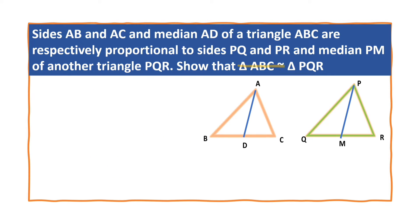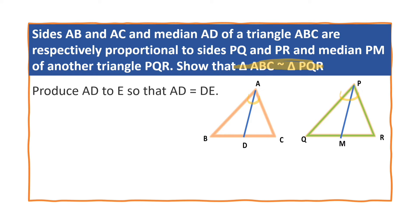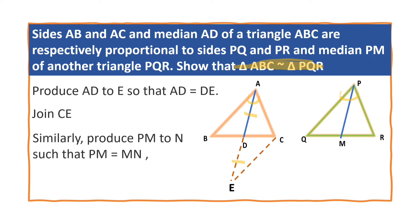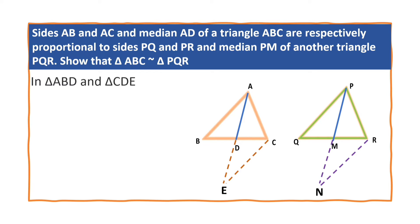In order to prove triangle ABC is similar to triangle PQR, we have to prove that angle A is equal to angle P. For this, we do the following construction: produce AD to E such that AD is equal to DE, and join CE. Similarly, produce PM to N such that PM is equal to MN, and join RN.